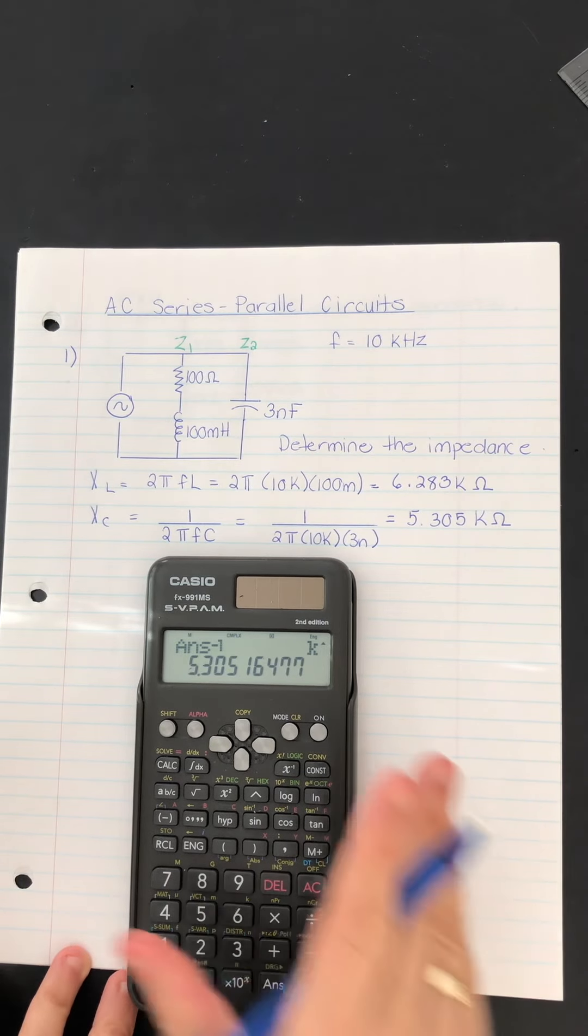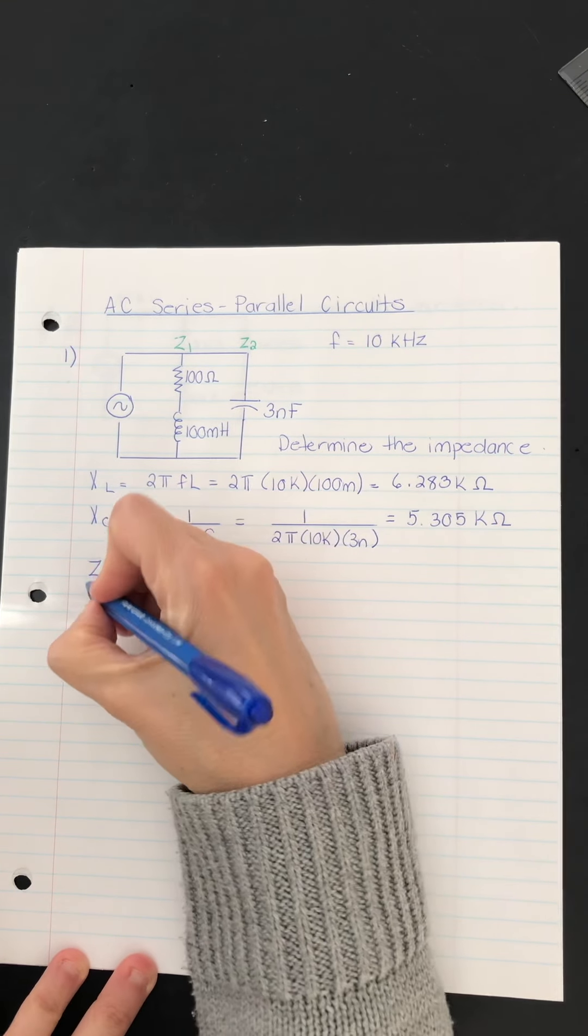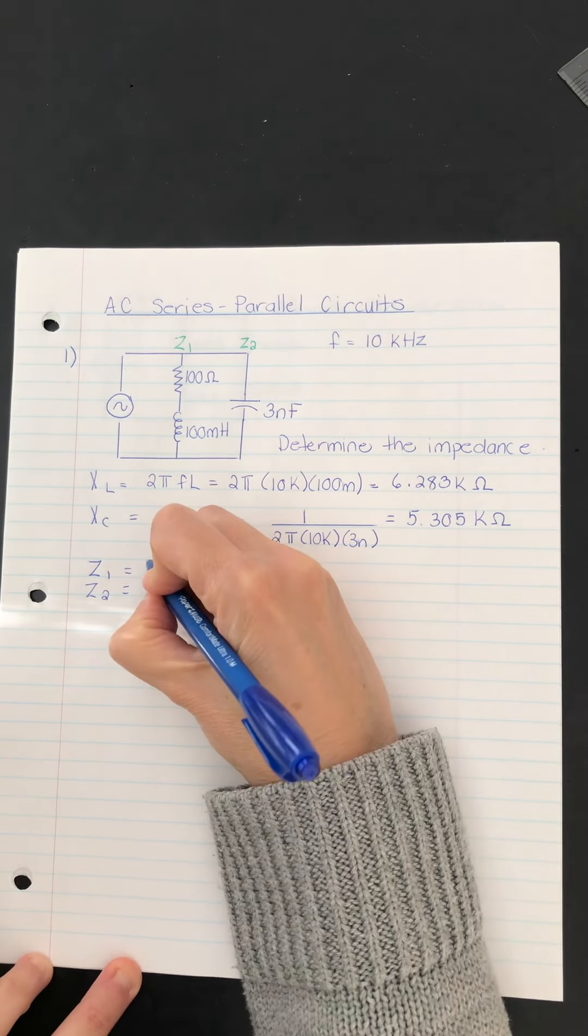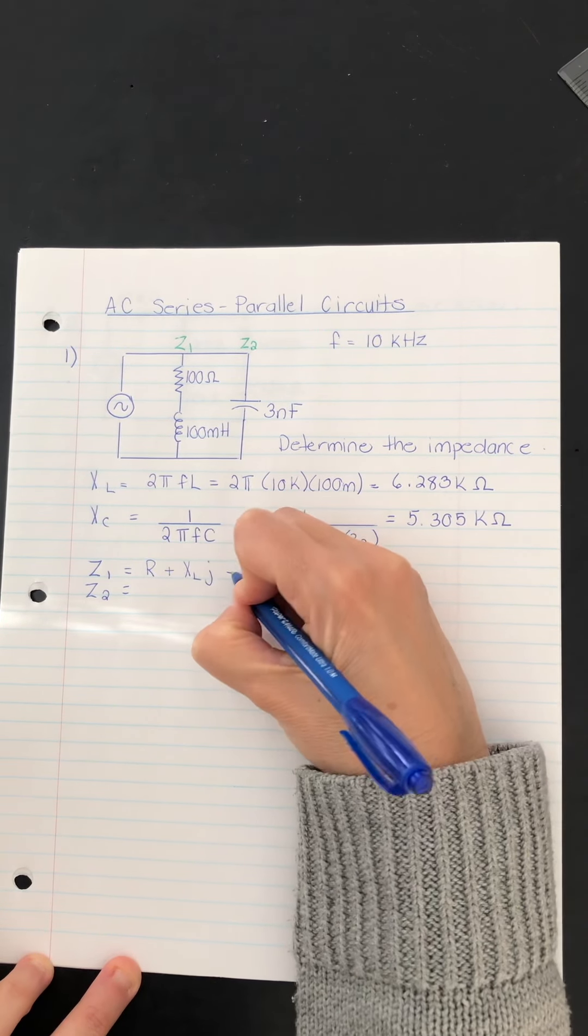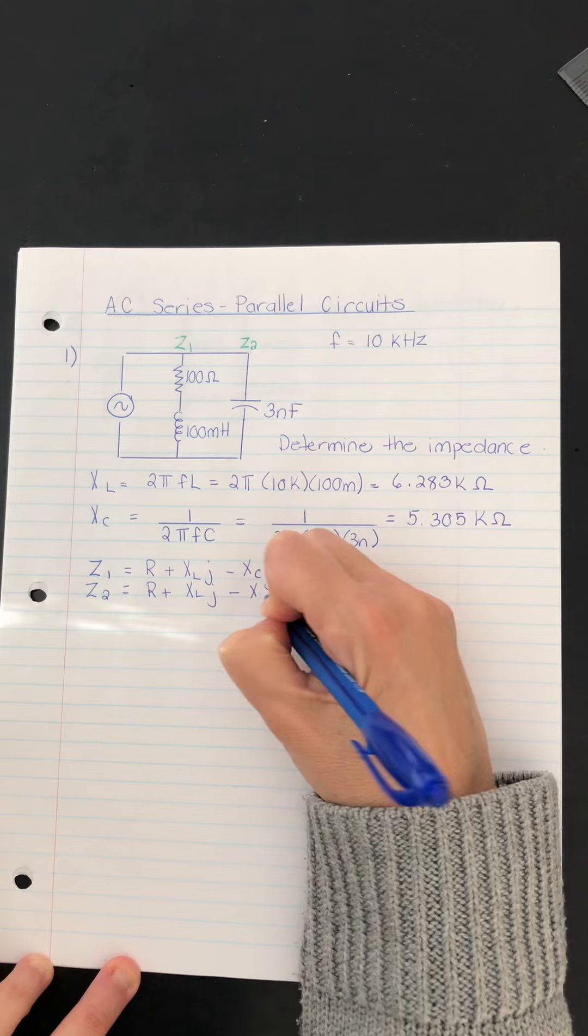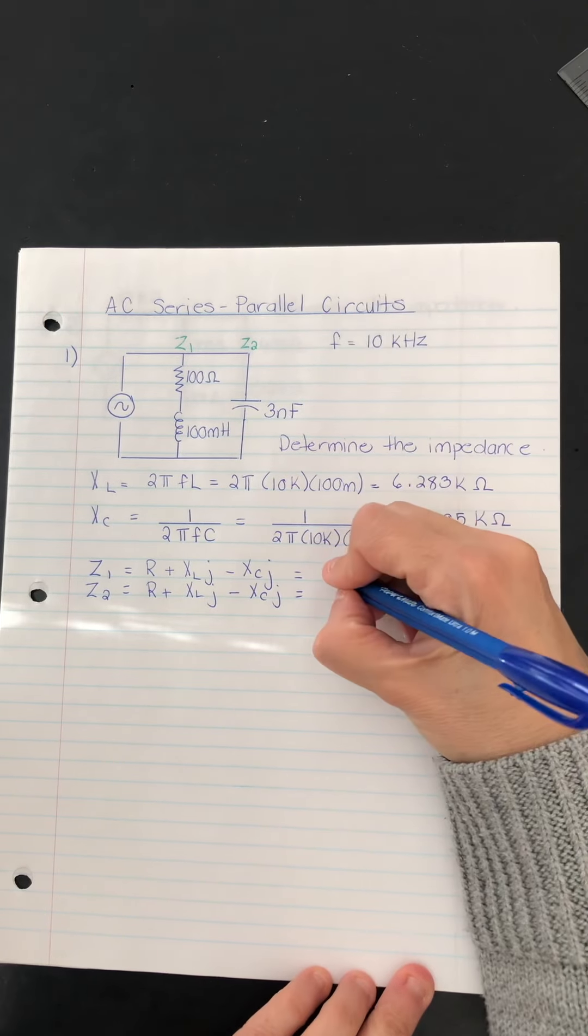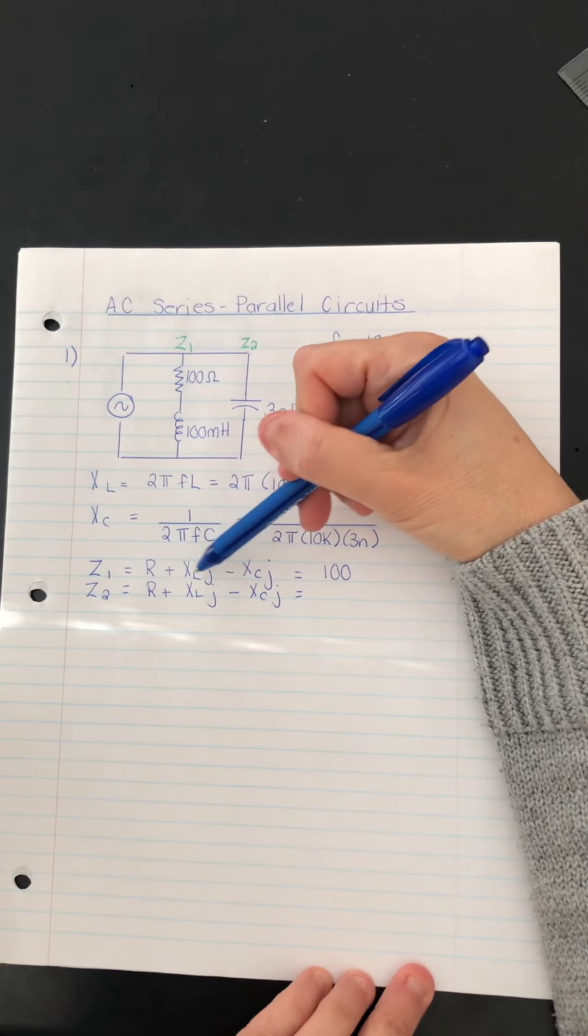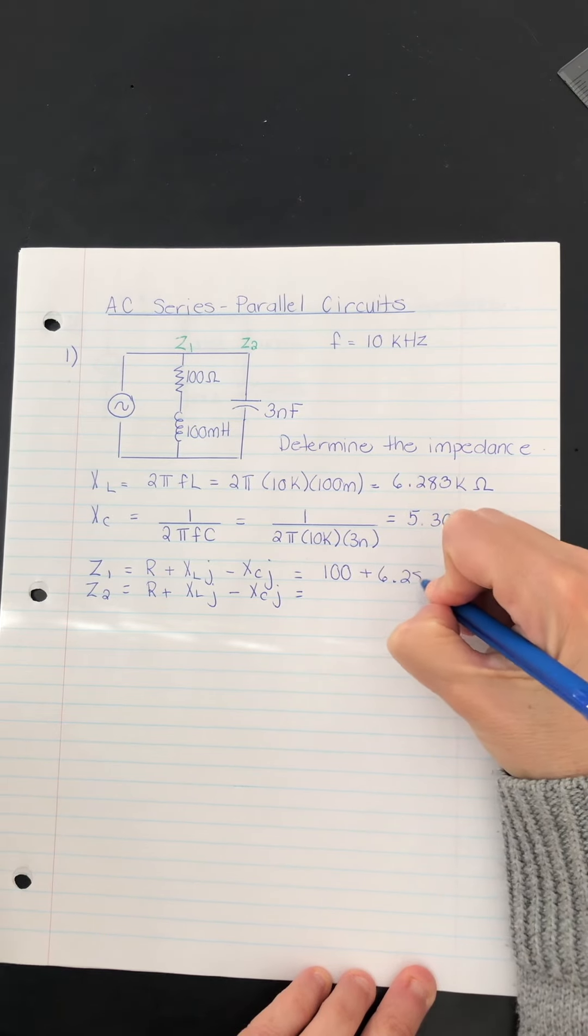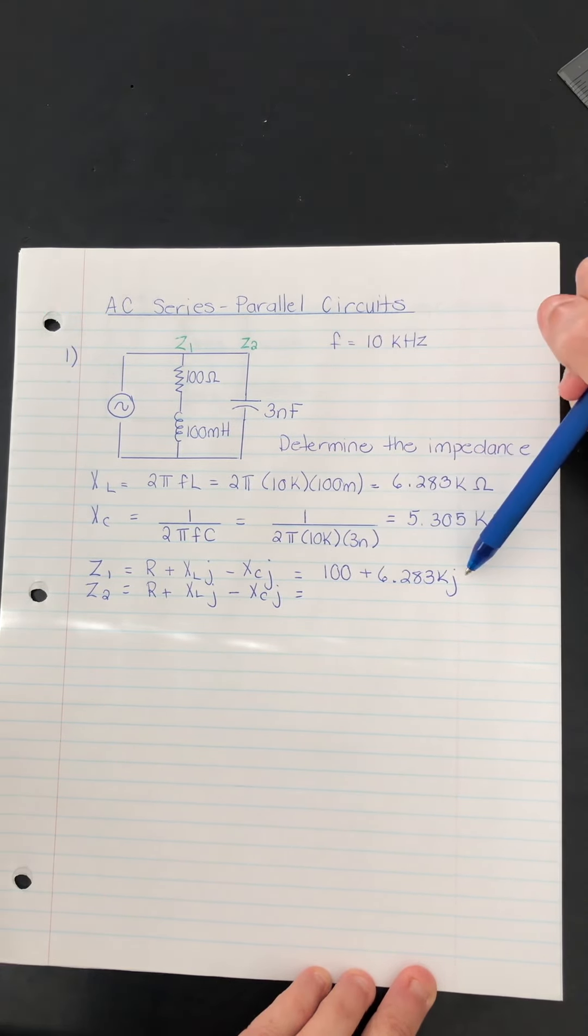So now I can write out an expression for Z1 and for Z2. Remember, we're using R plus XLJ minus XCJ on each branch. So let's start with branch one. R is 100 plus XLJ. So XL we worked out is here. So plus 6.283 kiloJ. And then there is no capacitor. So that's all we have for Z1.